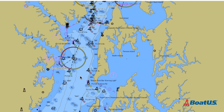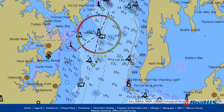First, notice the depth soundings are no longer given in feet — they're in meters. The smaller number is the fraction of meters, so a four with a small eight means the depth here is 4.8 meters.